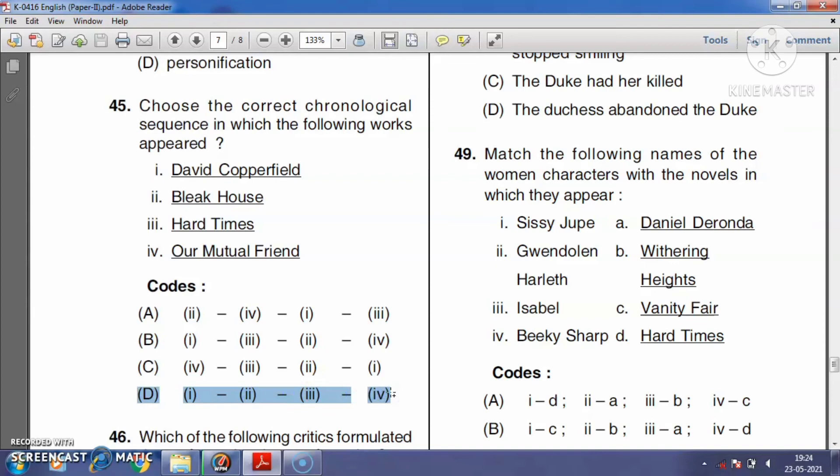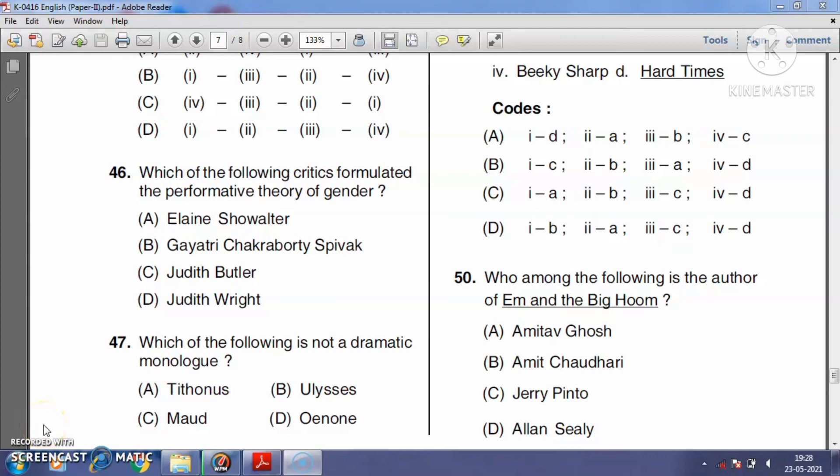Question number forty-six: Which of the following critics formulated the performative theory of gender? Elaine Showalter, Gayatri Chakravorty Spivak, Judith Butler, or Judith Wright? The right answer is Judith Butler. Judith Butler's book 'Notes Toward a Performative Theory of Assembly,' published in 2015, talks about gender politics and freedom of assembly. So the right answer is option C.